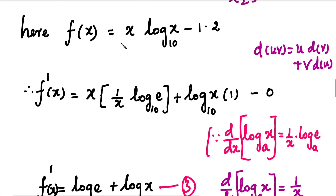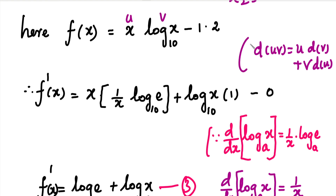f(x) = x·log(x) - 1.2. To differentiate, we have two terms. In the first term x·log(x), there are two different functions — this is a u·v product. We use the formula: d(uv)/dx = u·dv/dx + v·du/dx. We differentiate using this formula.